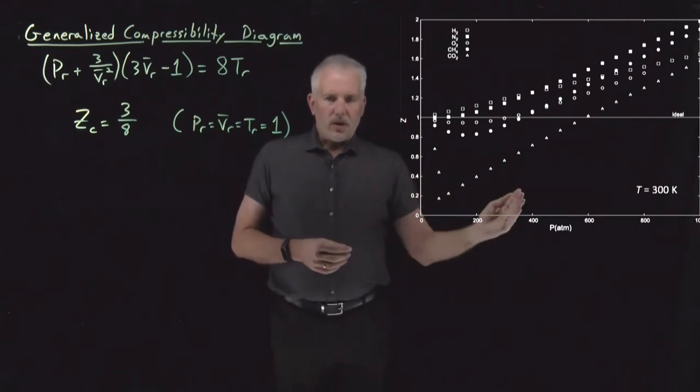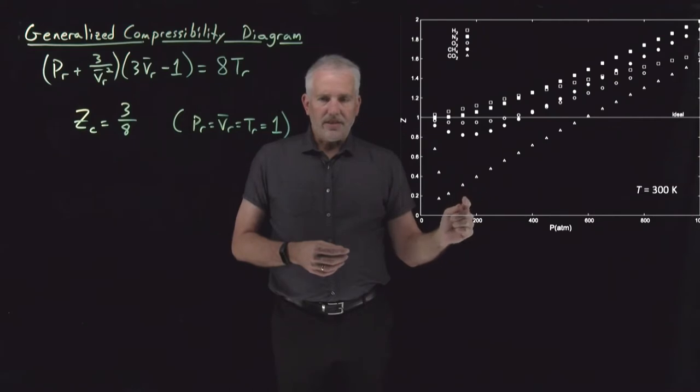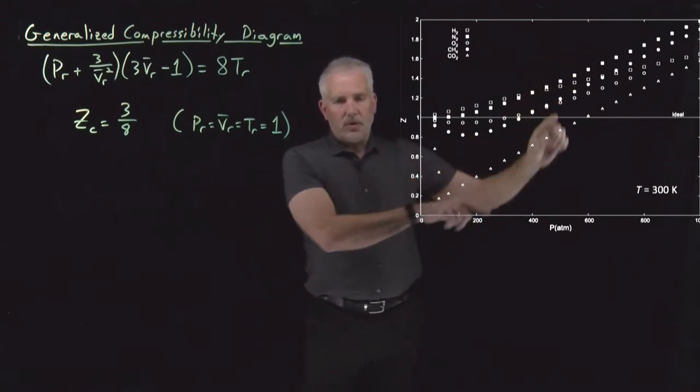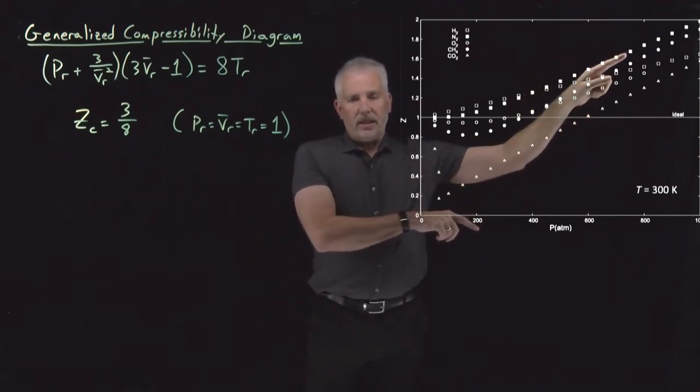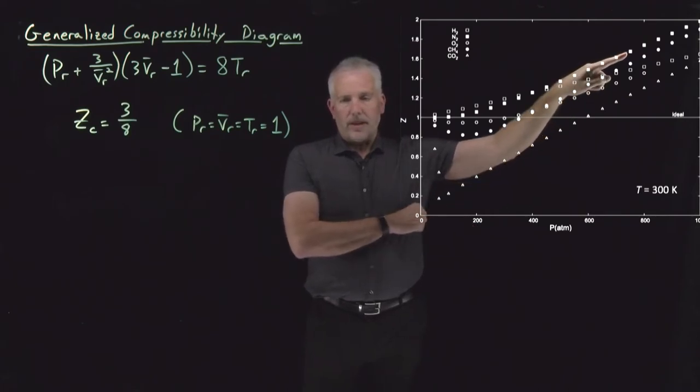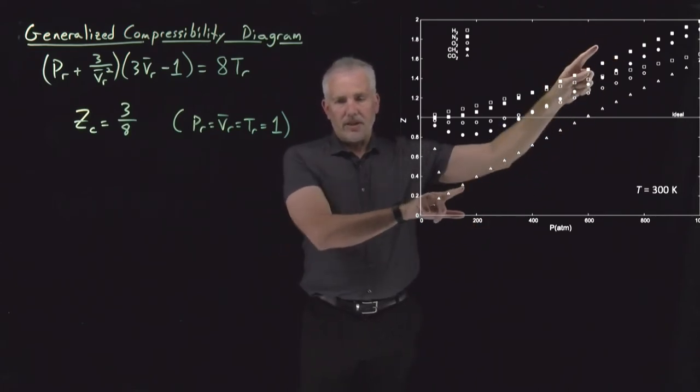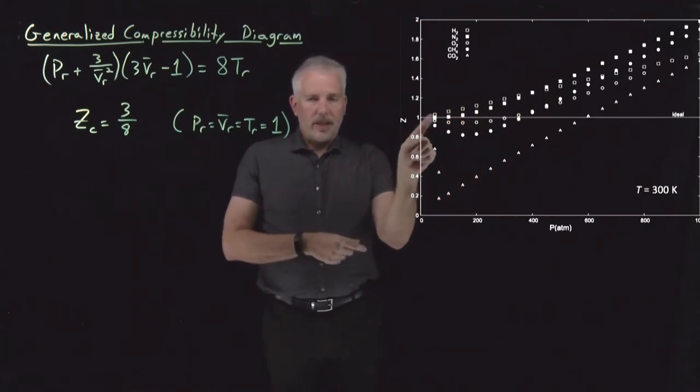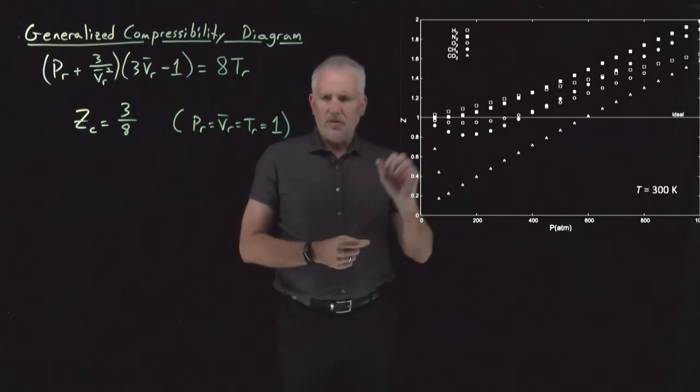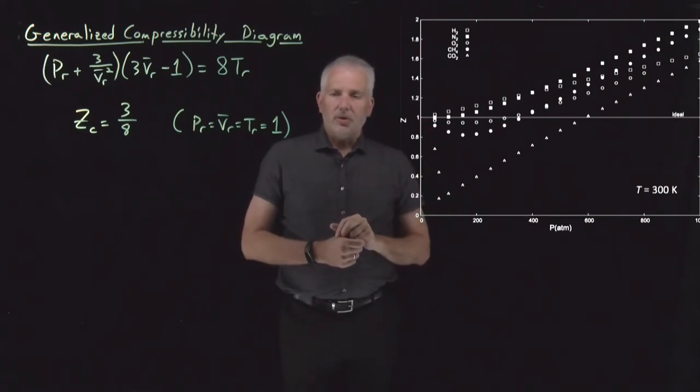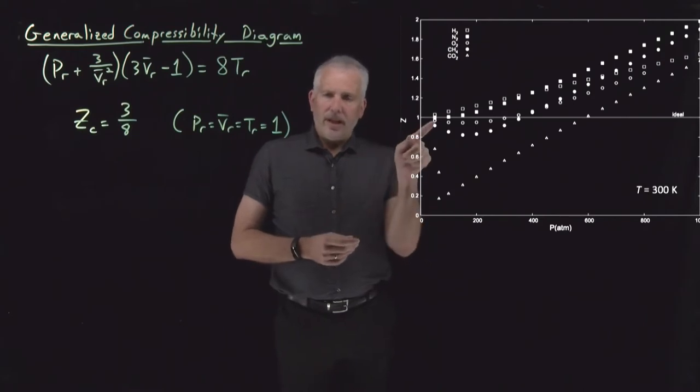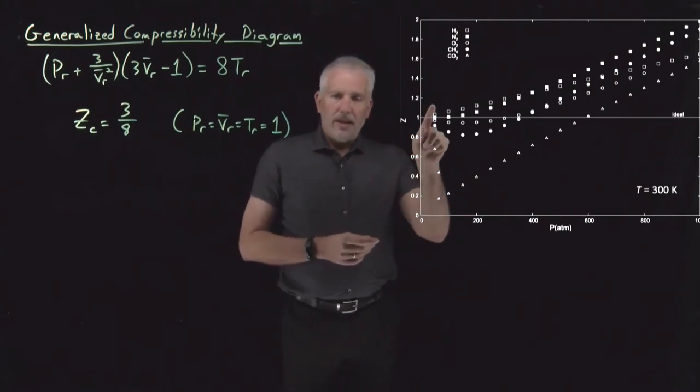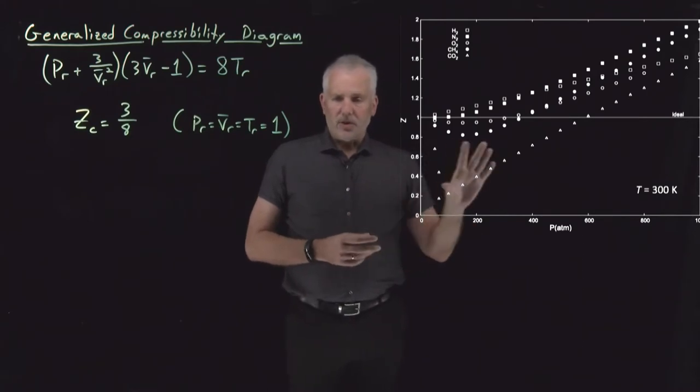But notice that as we go to low pressure, all these gases approach ideal behavior. So regardless of whether it's a gas dominated up here by finite volumes or by intermolecular interactions, at low enough pressures they approach ideal and then they'll behave ideally at low pressures. That's a little bit like Tolstoy's famous quote that every happy family is the same but all unhappy families are unhappy in their own unique way. Every ideal gas behaves the same. Once it becomes non-ideal, it behaves non-ideal in its own sort of way.